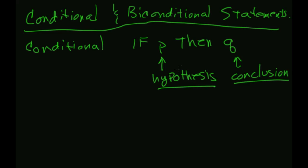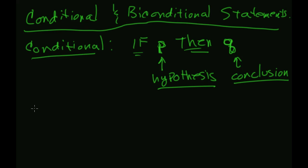If a conditional statement is true, then every time the p part is true it should lead to a true conclusion. This is what we call a conditional statement — it has an 'if' part and a 'then' part. We call the 'if' part the hypothesis and the 'then' part the conclusion.